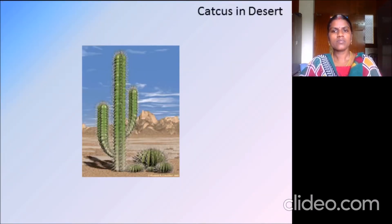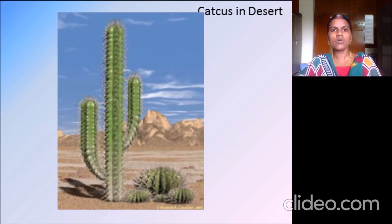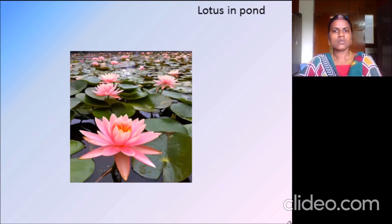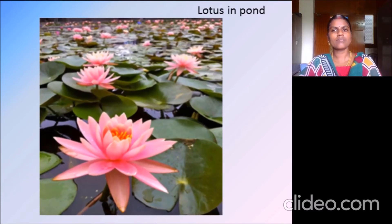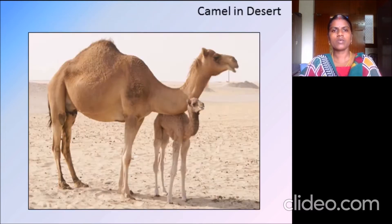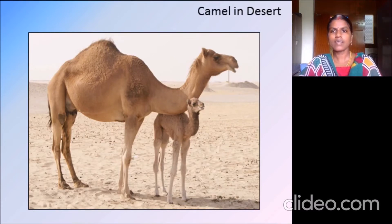You can see here a cactus. Where does the cactus grow? It grows in the desert area, so this is the habitat of the cactus. You can see here a lotus or a lily — where does it grow? It is seen in a pond, so this is the habitat of the lotus. And this is the camel — the desert is the habitat of the camel.